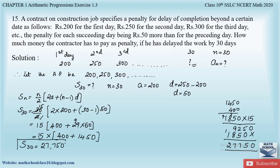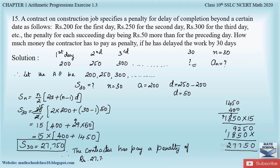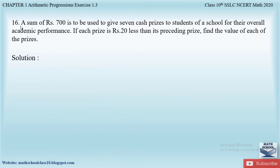Therefore, the contractor has to pay a penalty of rupees 27,750 if he has delayed the work by 30 days. Now let us solve question number 16 from Exercise 1.3.